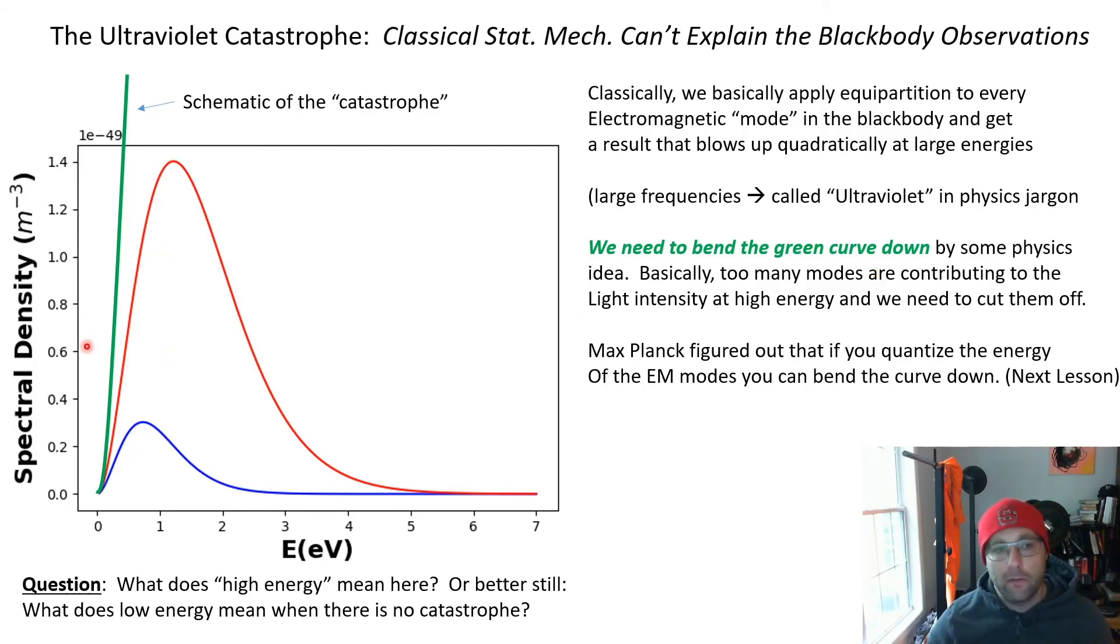But the basic idea is that classical statistical mechanics tells you that out at high energy there are just too much contribution to the light intensity. It's just orders and orders of magnitude above what you see experimentally. And so somehow we have to get rid of light intensity out at these high energies, and in fact we need to make it drop back down to zero by some reasonable energy.